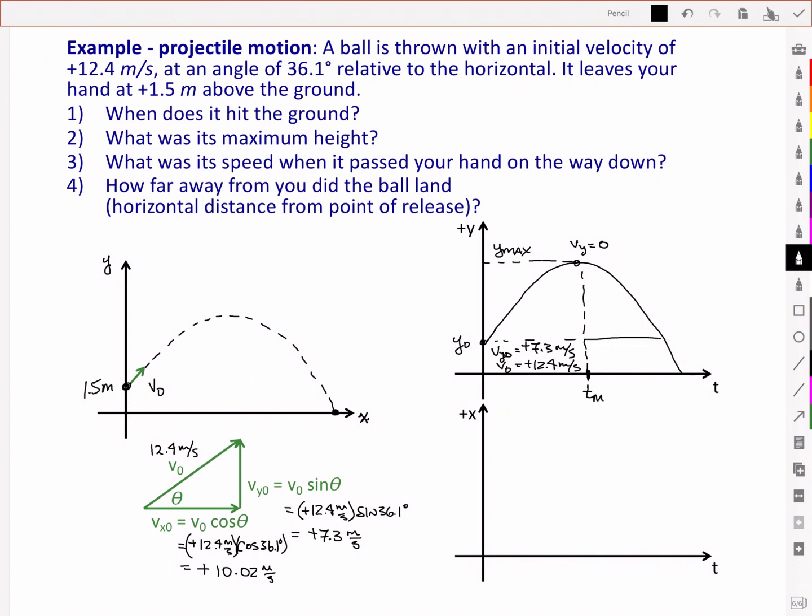And we're also looking at this time when it passes the hand again, and so at a y position equal to positive 1.5 meters but now on its way down. And lastly we're interested in this time here tg when it hits the ground, in other words when y equals 0.